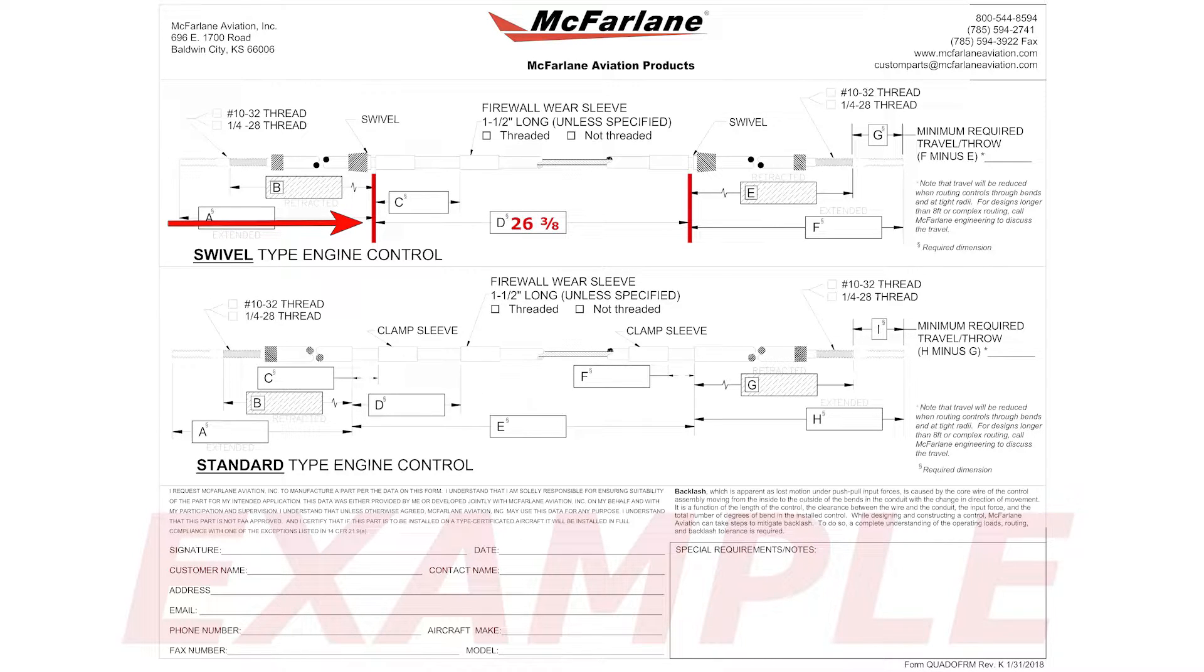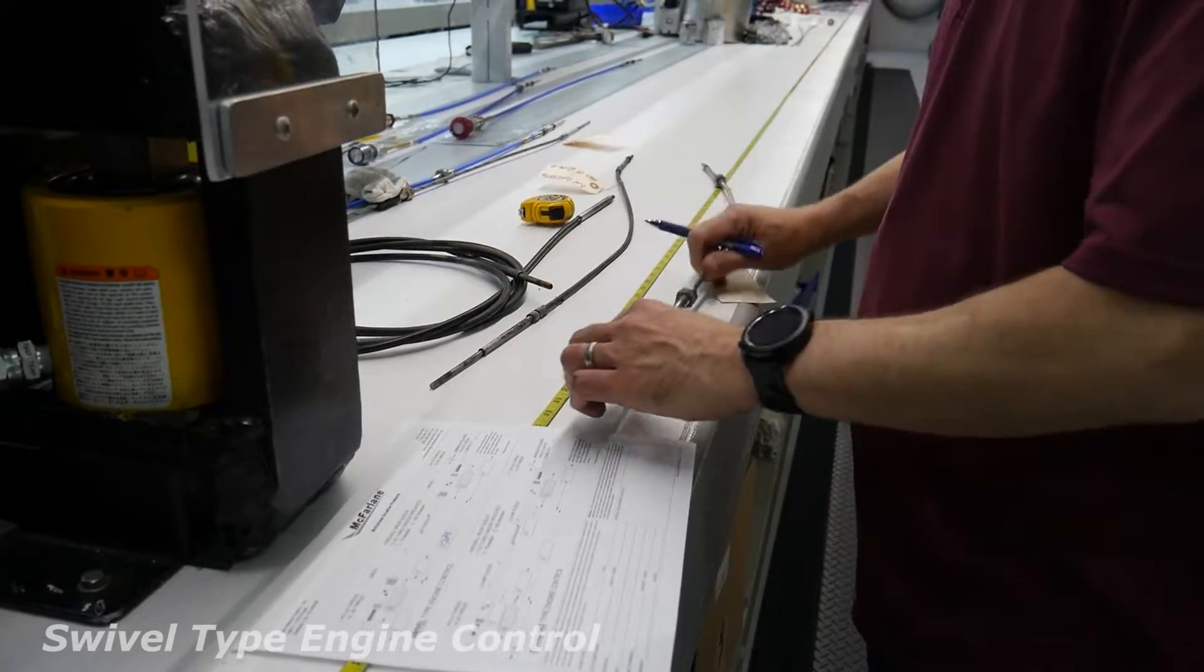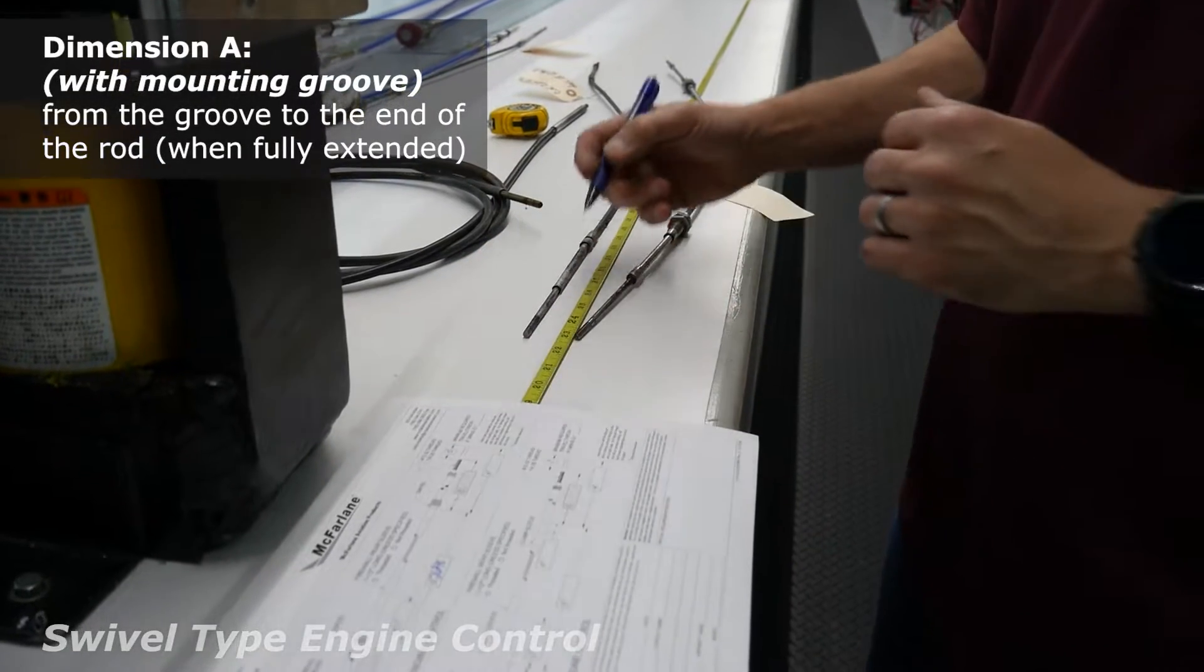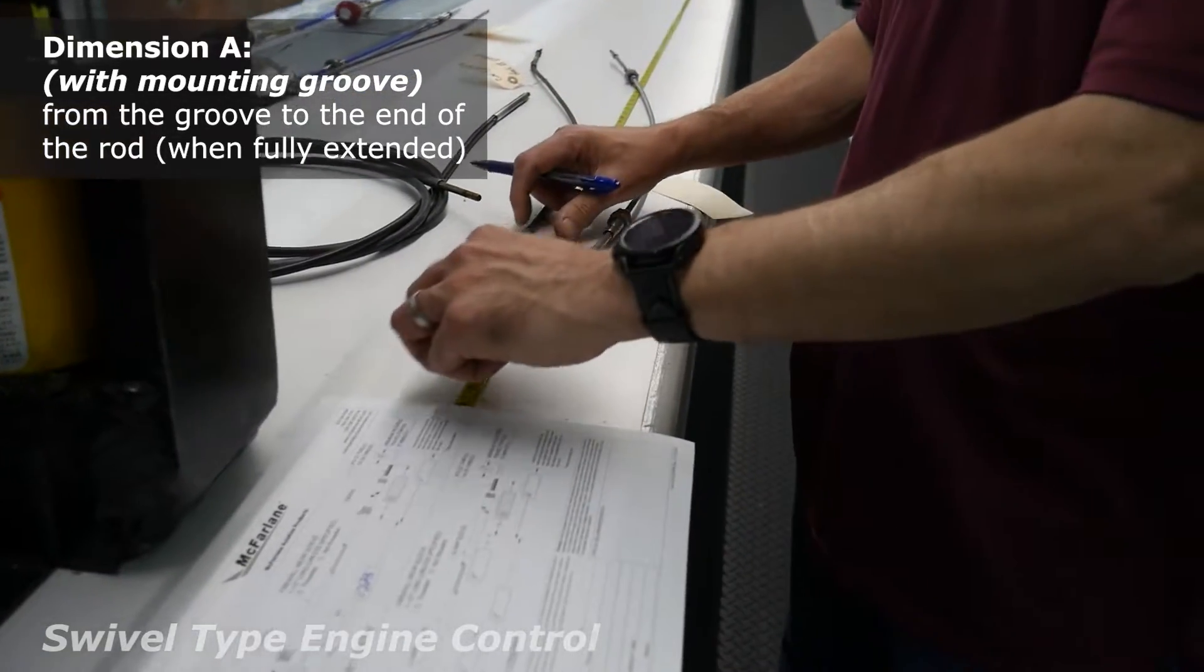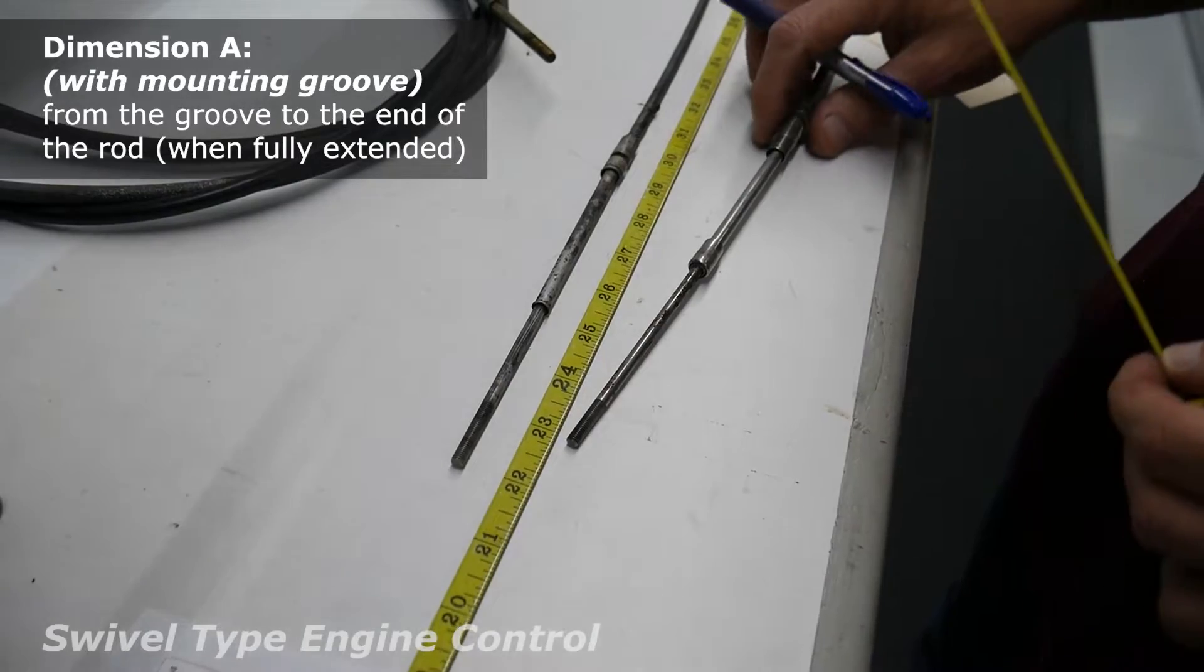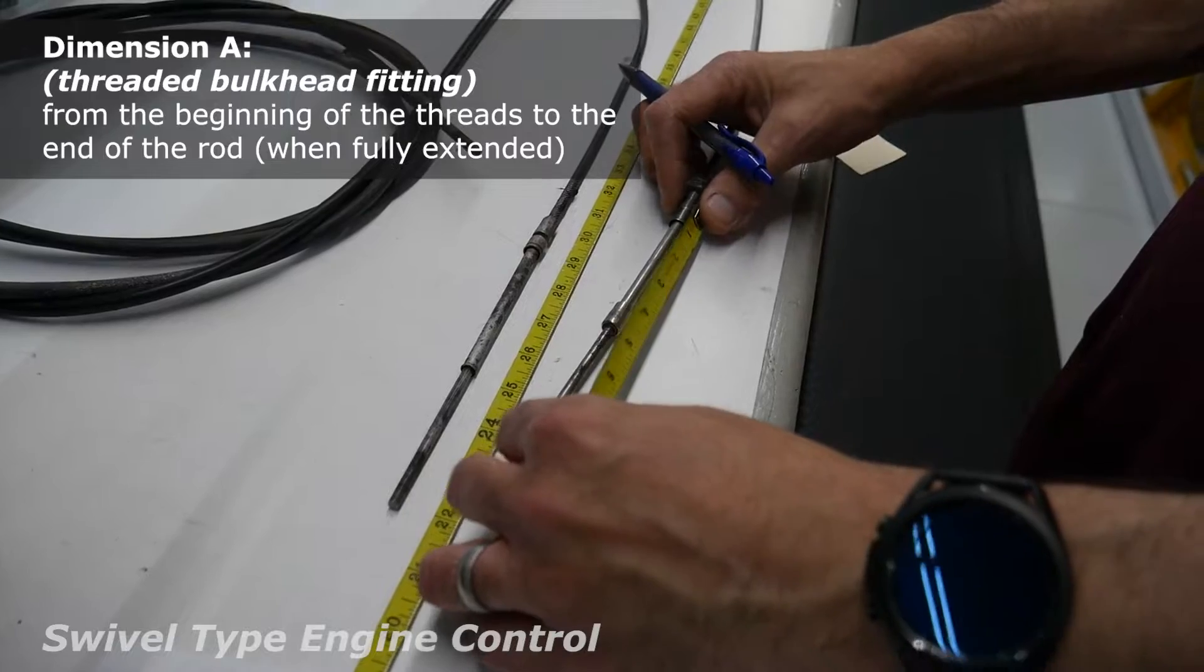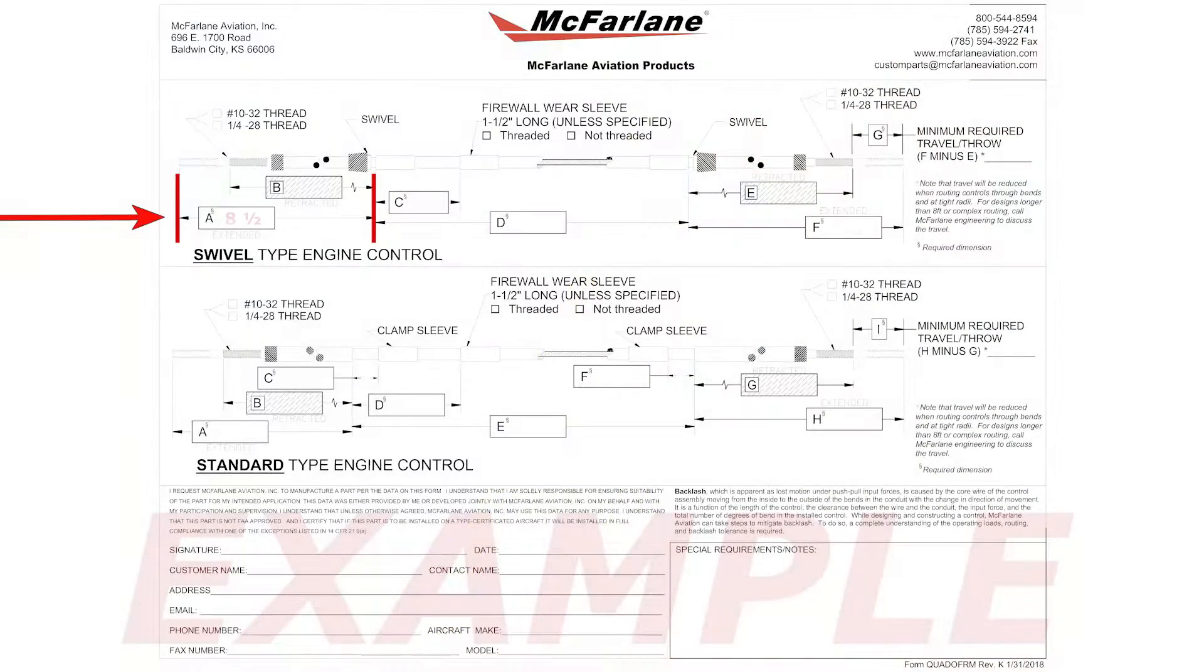And then we want dimension A and dimension F, which is also from this groove. So we would go from the groove to the end of the rod, or with the threaded one, it would be from the beginning of the threads there, to the end of the rod, which is eight and a half.